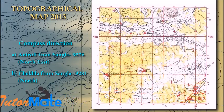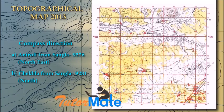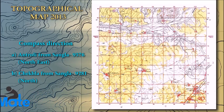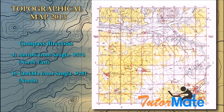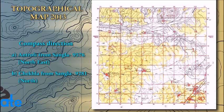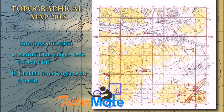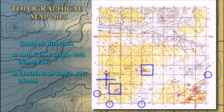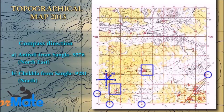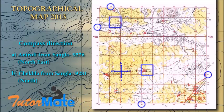The next question: what is the compass direction of Antaroli and Chekla from Sangla? The four-figure grid references of Antaroli and Chekla are given, making it easier to locate them. First find Sangla, then look at Antaroli from Sangla — the direction is northeast. The second sub-question is Chekla from Sangla — the direction is north.